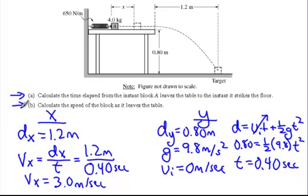B asks us to calculate the speed of the block as it left the table. There's no speed in the Y direction, the vertical direction, but there is speed in the horizontal direction. That gives us the parabolic motion.